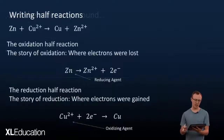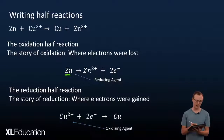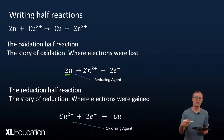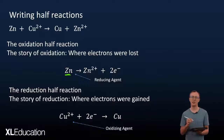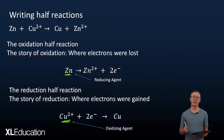We can see that in the oxidation half reaction, zinc underwent oxidation, and when you undergo oxidation you are the reducing agent. So zinc was the reducing agent, and the copper ion was the oxidizing agent because it underwent reduction.